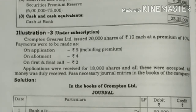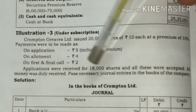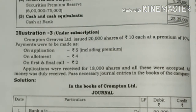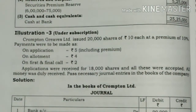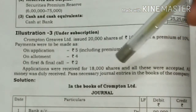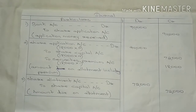Applications were received for 18,000 shares and all of these were accepted. All money was duly received. We will now pass journal entries in the books of the company. Let's go to the journal entries.